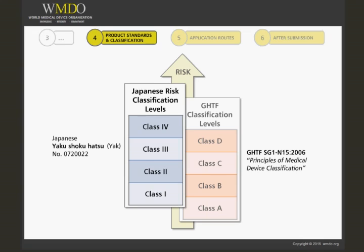Usually, you can use the GHTF guidance to classify your device, and the respective risk class is directly translatable to the Japanese class. For example, a class B device in the GHTF guidance will usually result in a class 2 device in Japan.